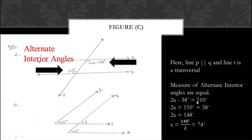So the equation is: 2X − 38° = 110°. In the next step, shift −38 to the other side, making it +38. Adding 110 + 38 gives 148°, so 2X = 148°. Dividing by 2 gives X = 74°. That is how we find the value of X in part C.